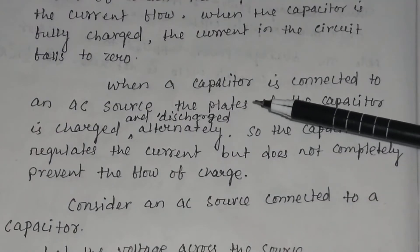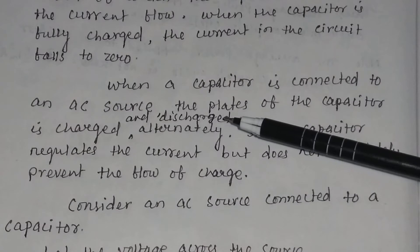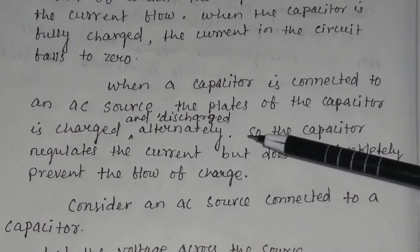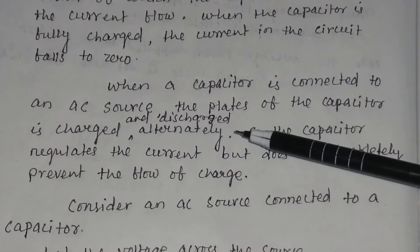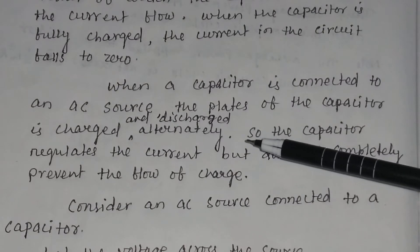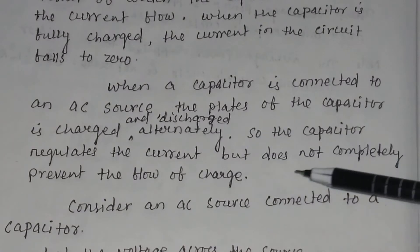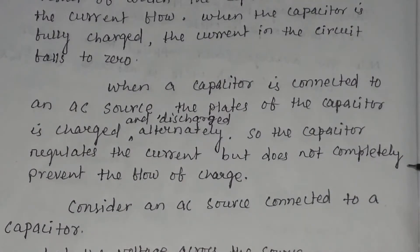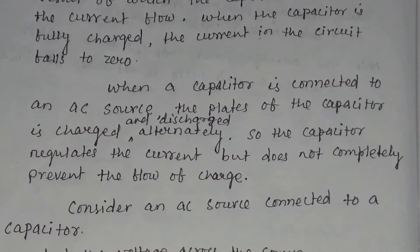When a capacitor is connected to an AC source, the plates of the capacitor are charged and discharged alternatively. So the capacitor regulates the current but does not completely prevent the flow of charge.